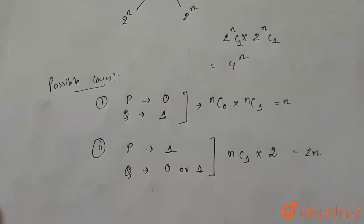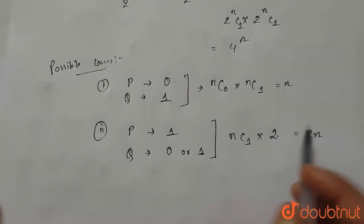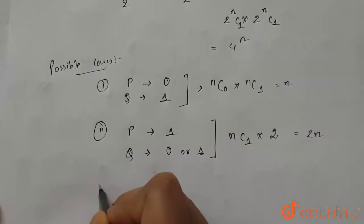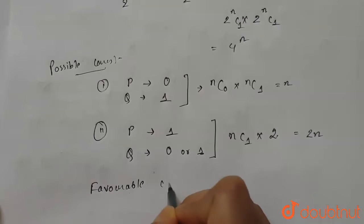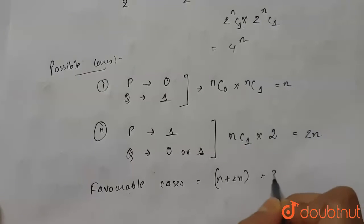From here we can see that the number of ways, the favorable cases is equal to n plus 2n which is equal to 3n.